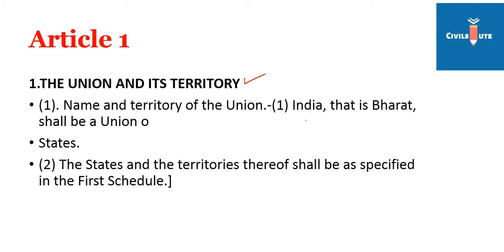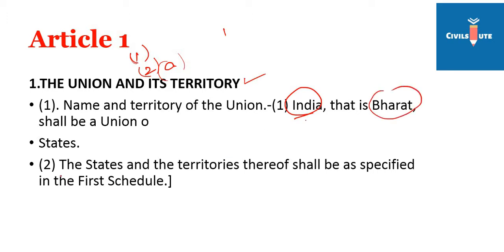In the first article, there is a subclass. In clause 1, the name is — India, that is Bharath, shall be a union of states.